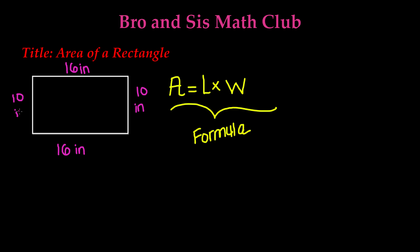So to find the area of this rectangle, all we have to do is multiply the length times the width. So 16 times 10. And when we do the multiplication, 16 times 10, it gives us 160.